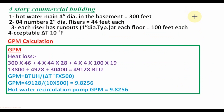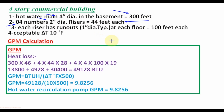In the hot water supply piping network, there is one main running at the basement of diameter 4 inch and its length is 300 feet. There are 4 hot water risers connected to the main of diameter 2 inch and each riser length is 44 feet. There are 4 branches of diameter 1 inch connected to each riser and each branch length is 100 feet.